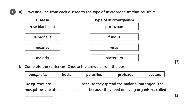Clearly this is quite a straightforward question. However, we still need to be very careful with our answer, making sure our line connectors are very clear and we're not making any silly mistakes. So we'll start off with rose black spot — that is a fungus, so we'll draw a nice clear line from that to fungus.